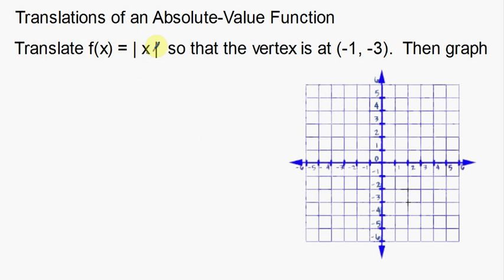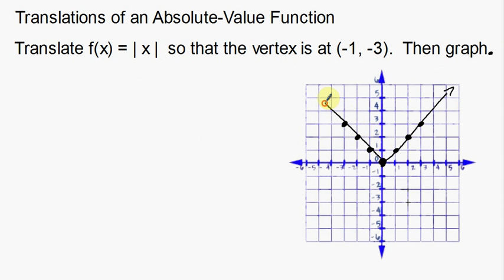We're going to translate our basic absolute value function — here's our very basic absolute value function. So that the vertex is at negative one, negative three. We'll go over what the vertex is in a second. First I'm going to graph the basic function so we know what we're moving around. An absolute value function basically looks like a V. Going up one over one, up one over one, up one over one, and the same thing on the other side — up one left one, up one left one, up one left one.